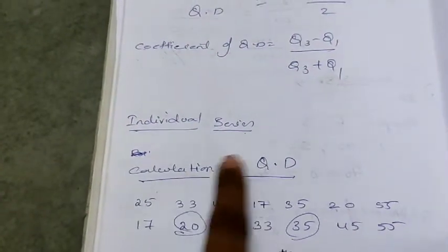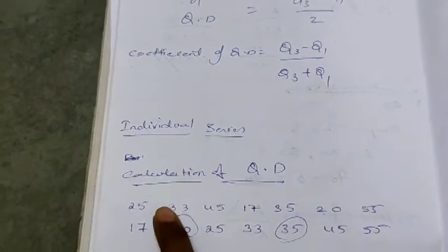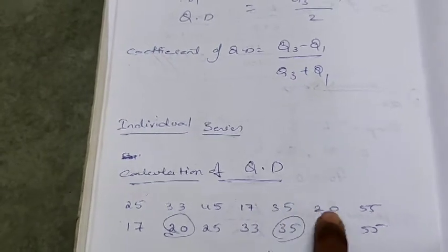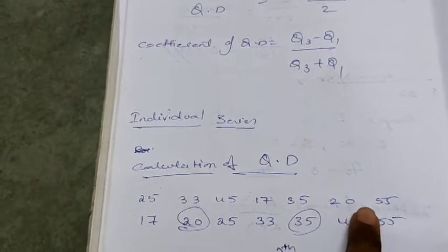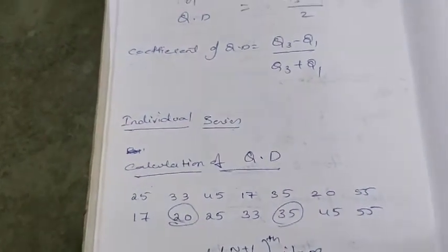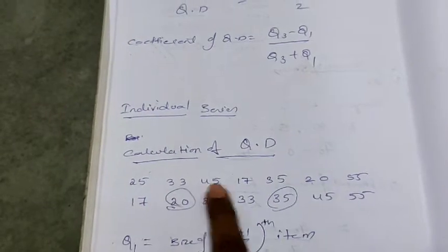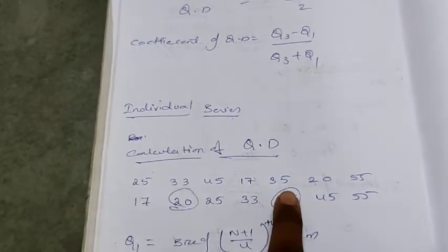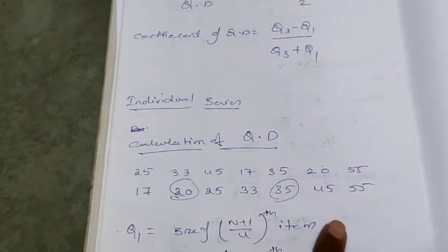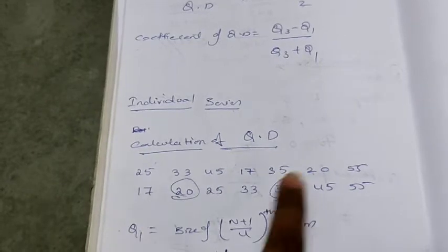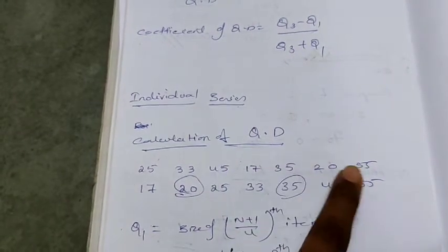See, first individual series, calculation of quartile deviation. So this is the question: 25, 33, 45, 17, 35, 20, 55. By seeing this we can say that this is an individual series. So now first of all the series should be converted into ascending order. So first is 17, next is 20, next is 25, then 33, 35, 45, 55.